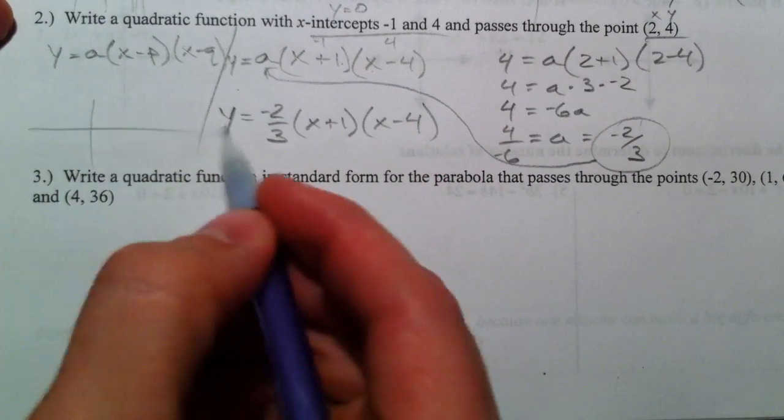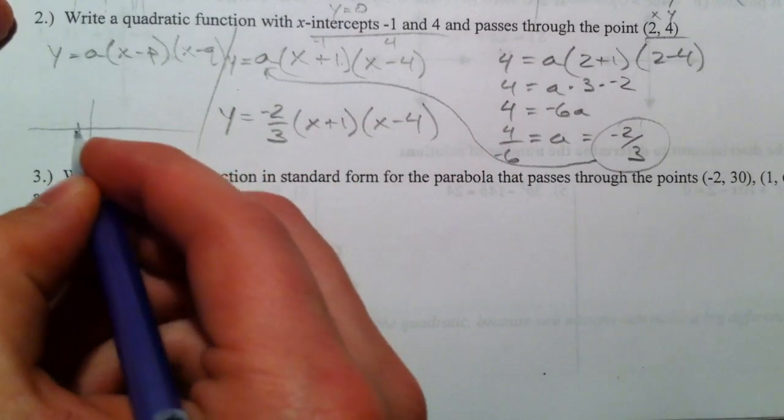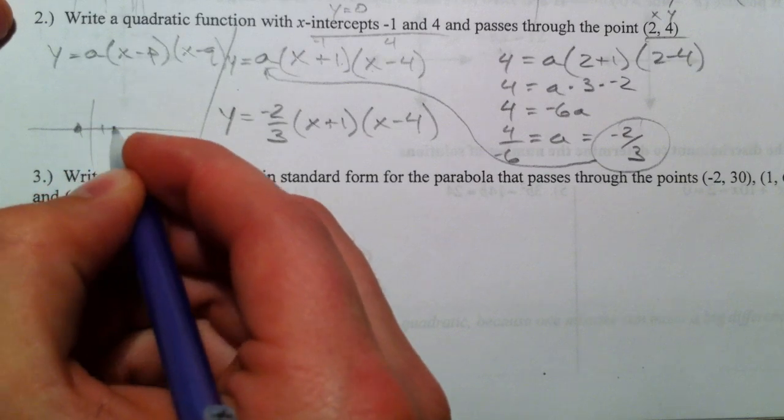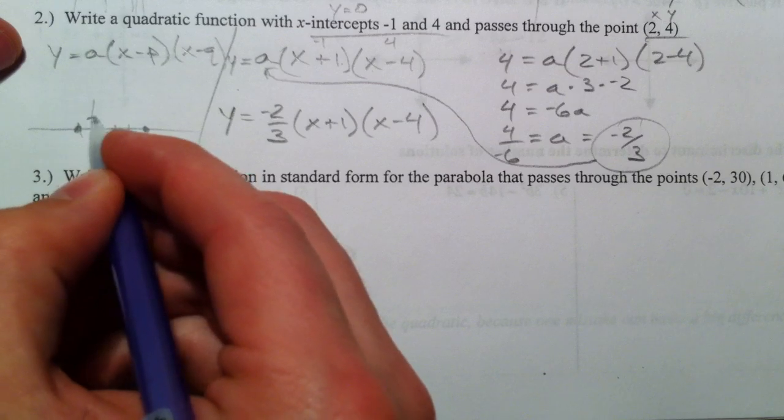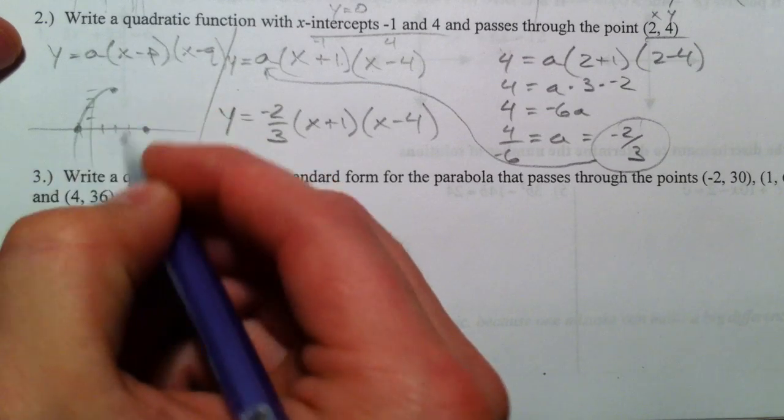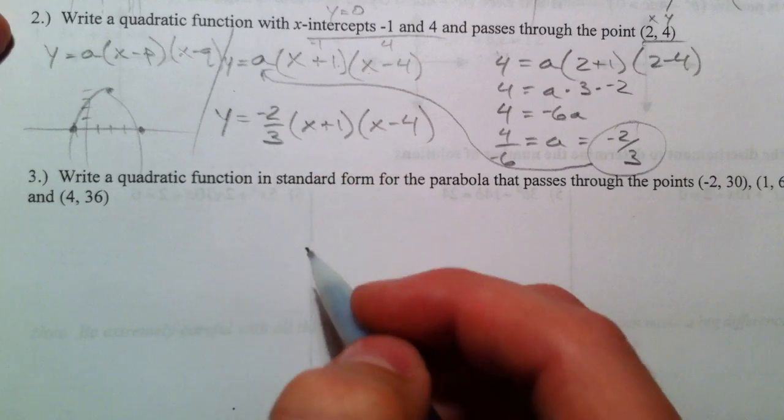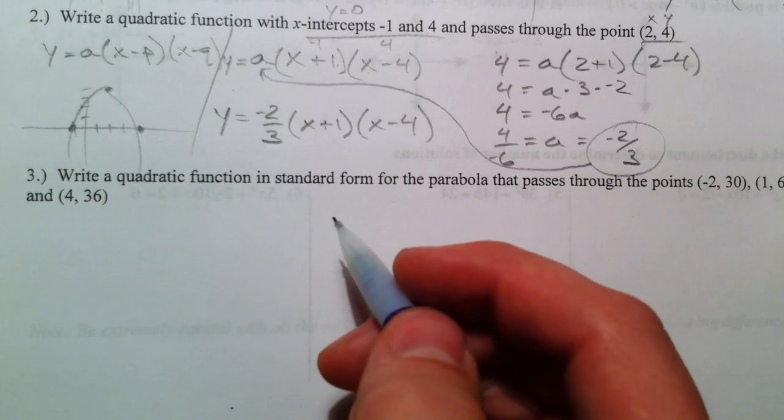Again, visually, it's got to go through negative 1, it's got to go through 1, 2, 3, 4, and it's got to go through 2, comma 1, 2, 3, 4. And so you know it's got to open upside down, and so getting an a value of negative 2 thirds is okay.